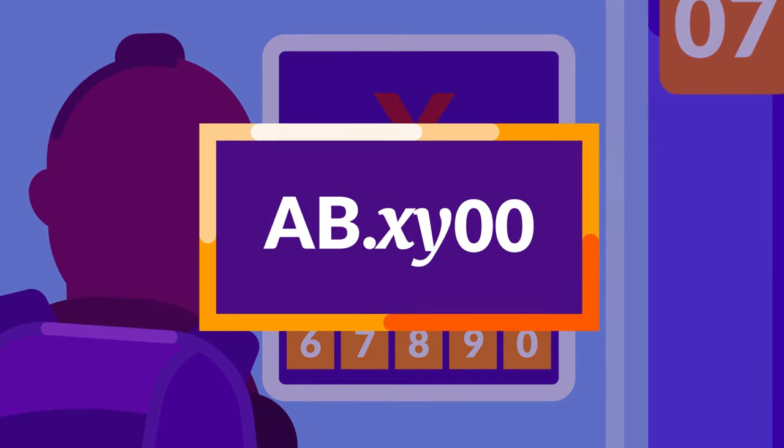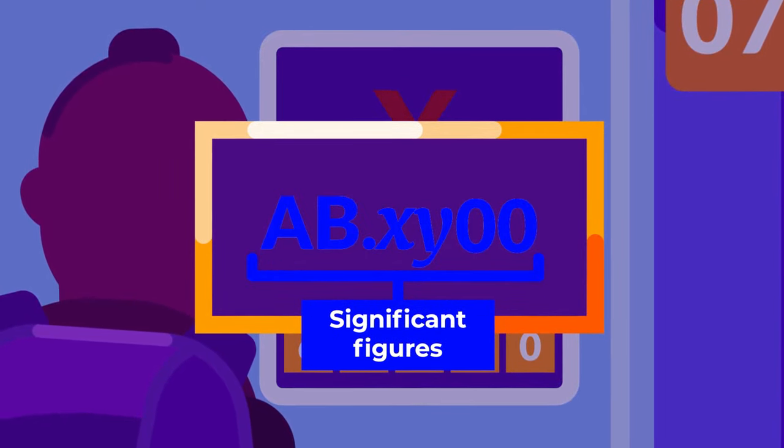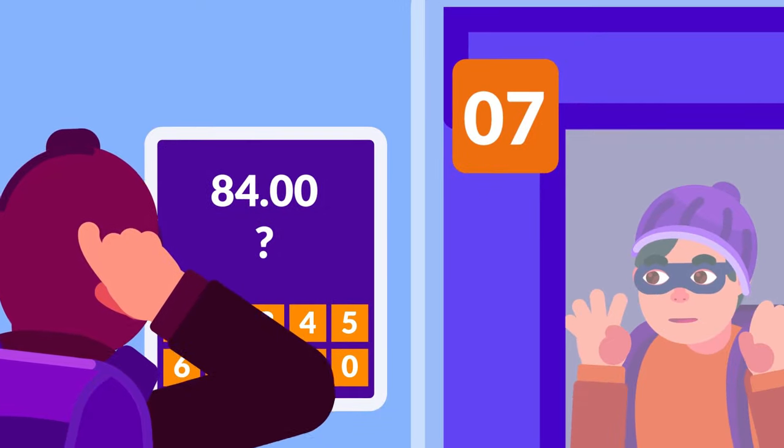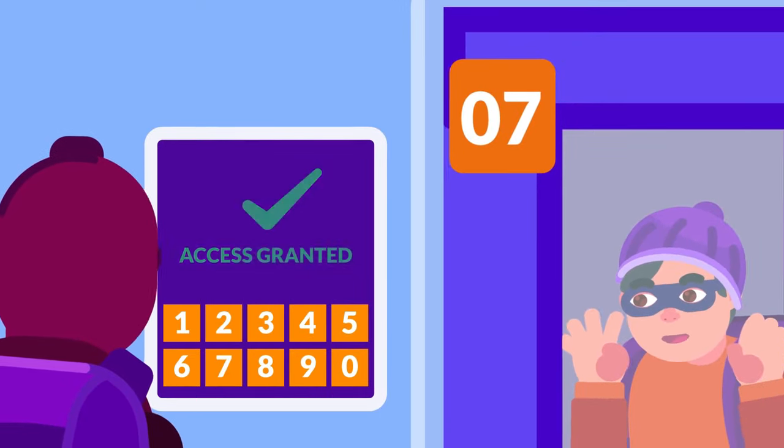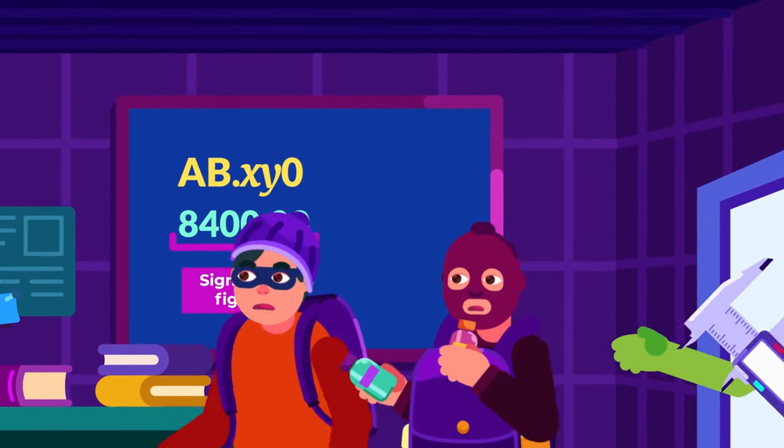Trailing zeros, the zeros that appear after non-zero digits in a whole number where the decimal point is shown, are significant. This means 84.00 has 4 significant numbers. And 8400.00, for instance, has 6 significant numbers.